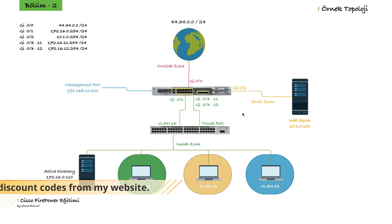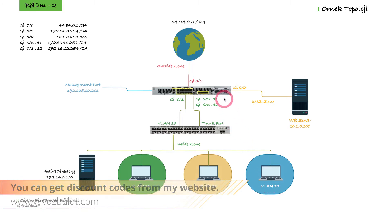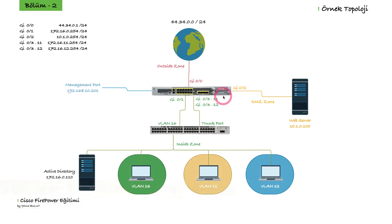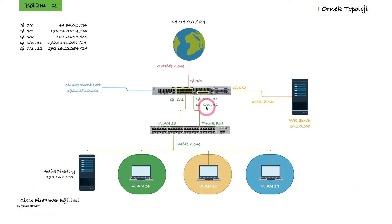In this lesson, we will configure a DHCP server on our firewall. In this example, we will terminate our VLANs in the firewall. We will enable users in VLAN 11 and VLAN 12 to get an IP from the DHCP server on the firewall. Now let's go to the firewall side and make the DHCP server settings for our sub-interfaces and let our users get IPs.